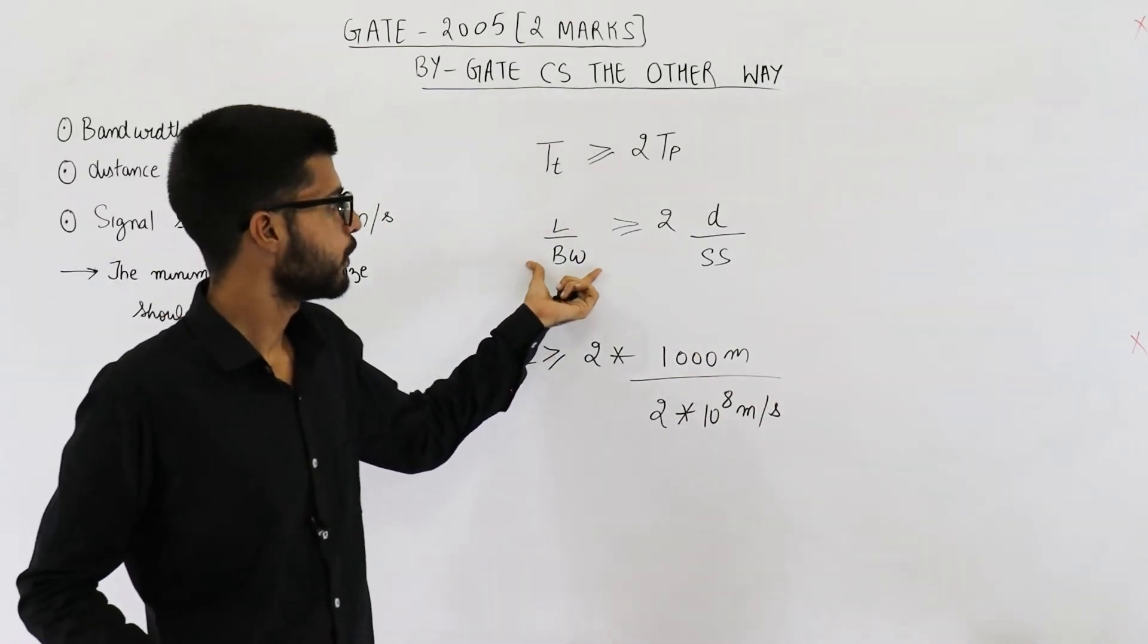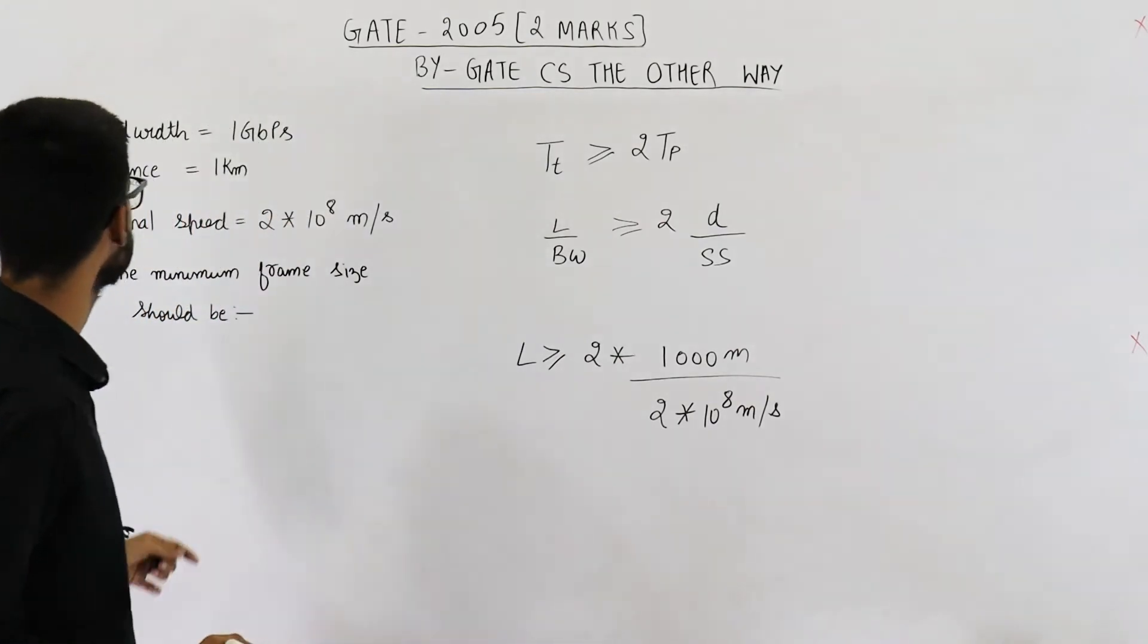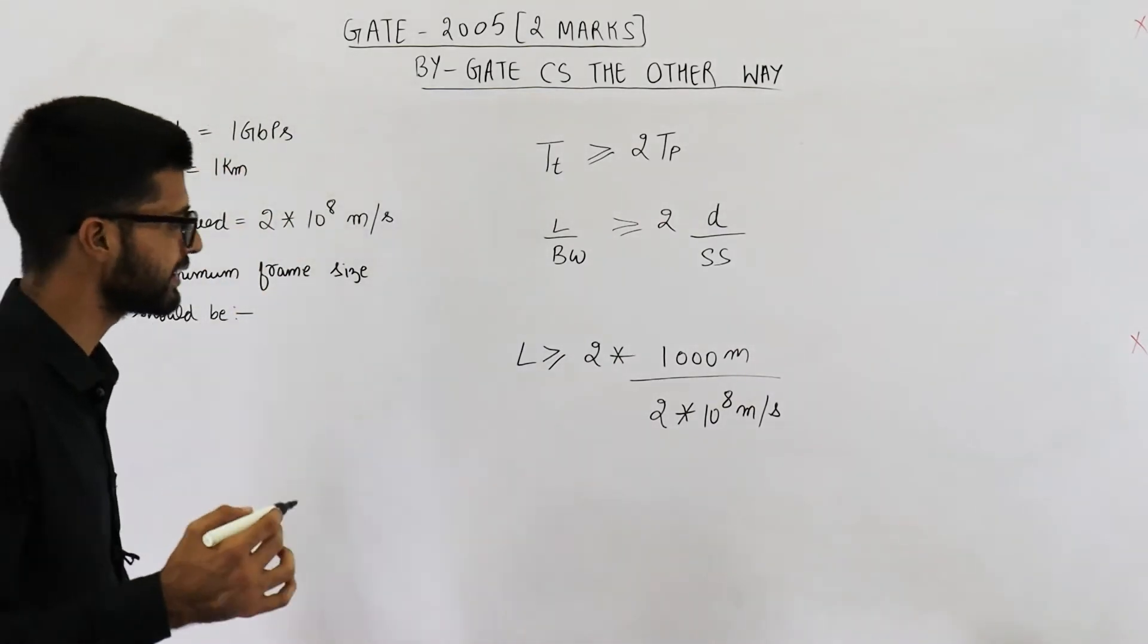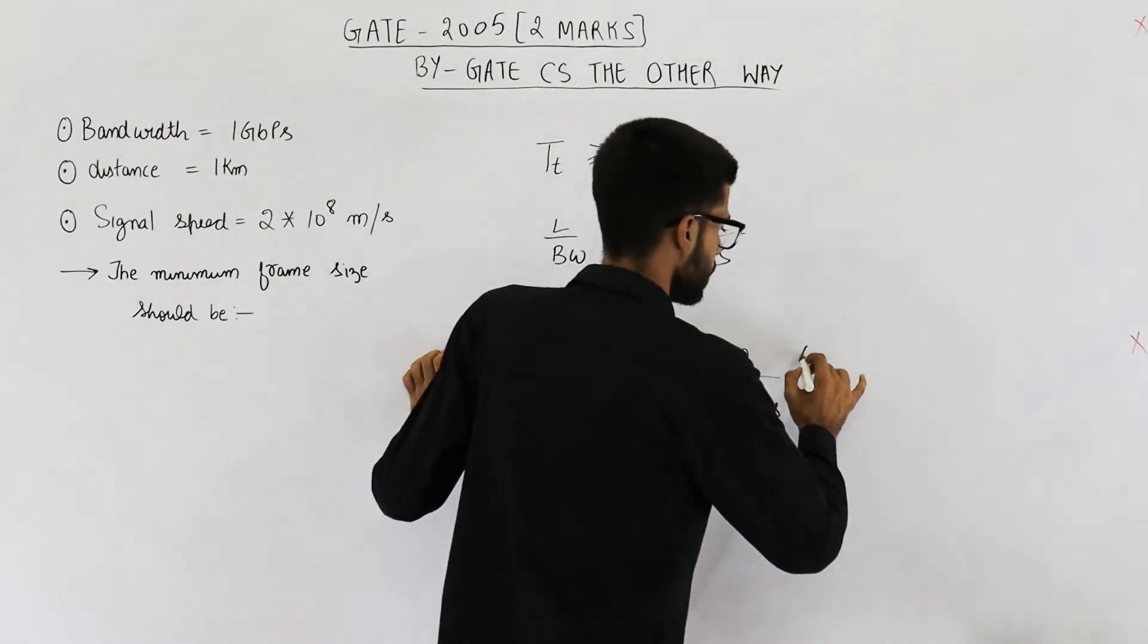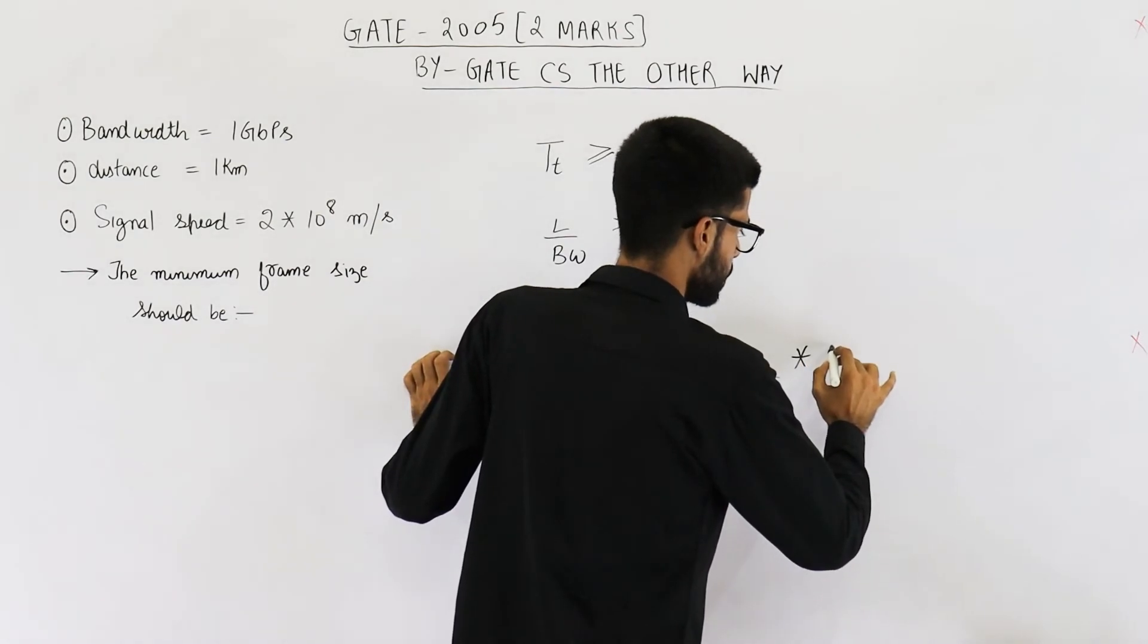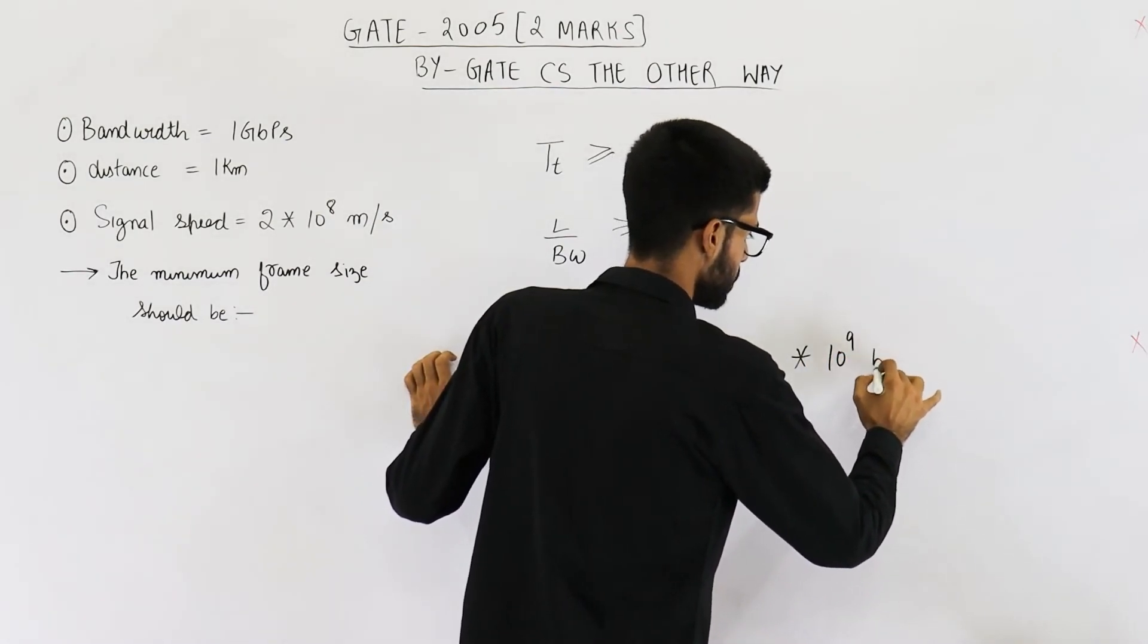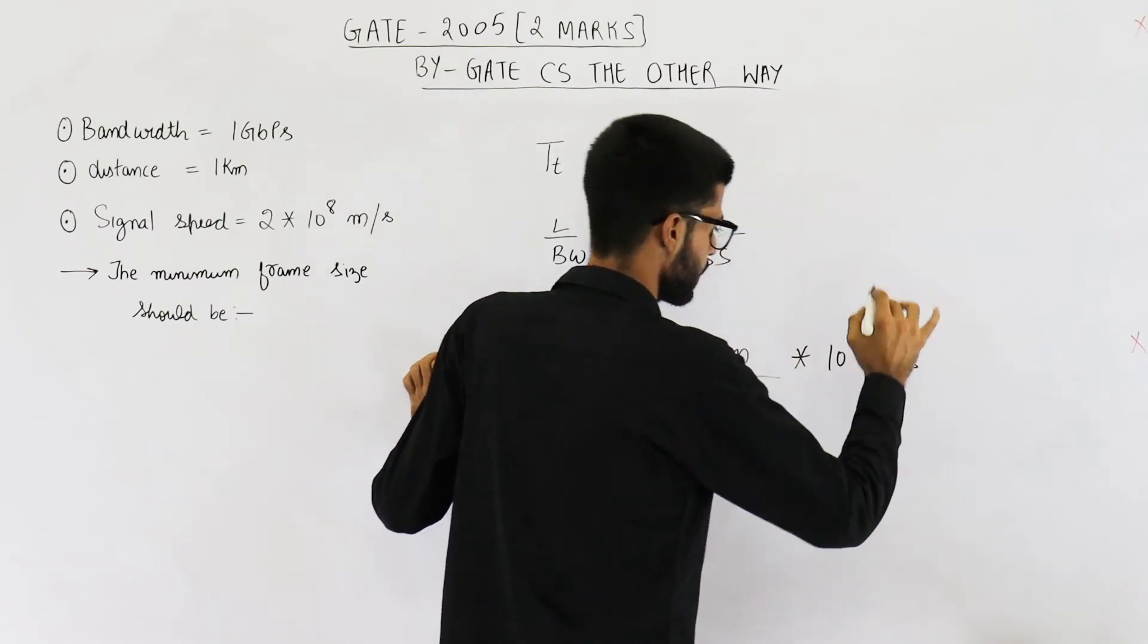So bandwidth given is 1 gigabits per second. Giga means 10 raised to the power 9 bits per second.